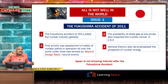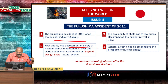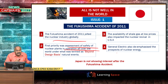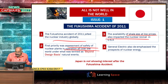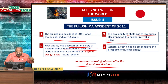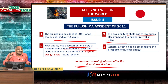But all is not well in the world. Three key incidents are relevant. First, the Fukushima accident of 2011 jolted the nuclear industry globally. The first priority became assessing the safety of nuclear plants in operation — testing them for beyond-design-basis natural calamities. Additionally, the availability of shale gas at low prices impacted nuclear revival in the USA, and Japan is not showing interest in nuclear power after the Fukushima accident.